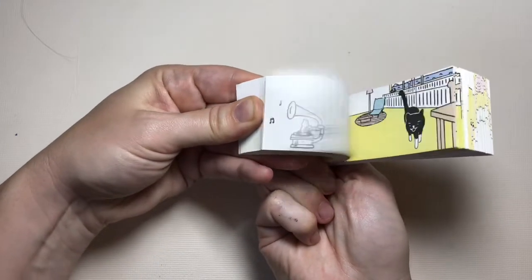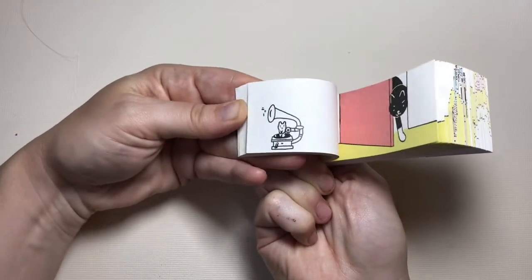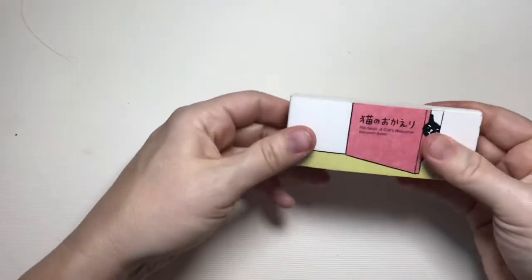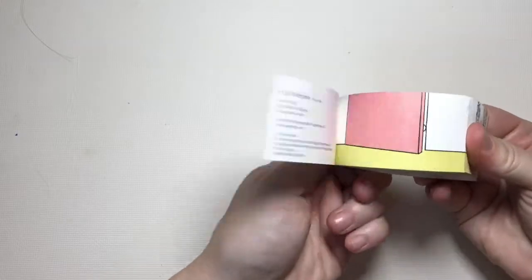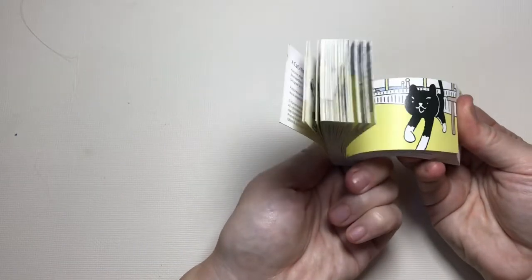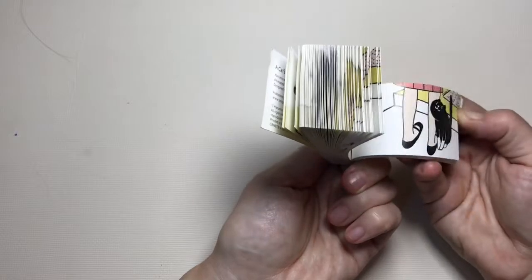When I flip it backwards the movie plays backwards and this flip book has an extra animation on the left hand side with a record player and music notes. When I flip it forward we get to see the cat come back out into the apartment and greet its owner.